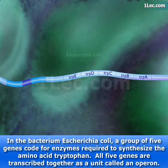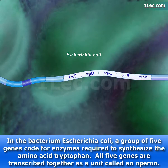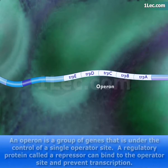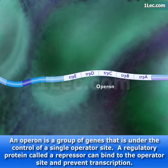In the bacterium Escherichia coli, a group of five genes code for enzymes required to synthesize the amino acid tryptophan. All five genes are transcribed together as a unit called an operon — a group of genes that is under the control of a single operator site.